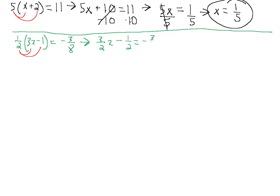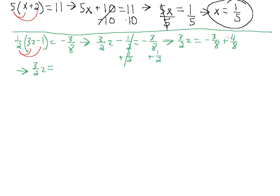Then minus 1 half times 1 is just 1 half, and we still have minus 3 eighths on the other side. Let's go ahead and move the minus 1 half over to the other side by adding a positive 1 half to both sides — this cancels out. We're left with 3 halves z equals. We rewrite 1 half with a common denominator of 8, so positive 1 half is the same thing as 4 eighths. We have a positive 4 eighths and a minus 3 eighths, which gives us a positive 1 eighth.